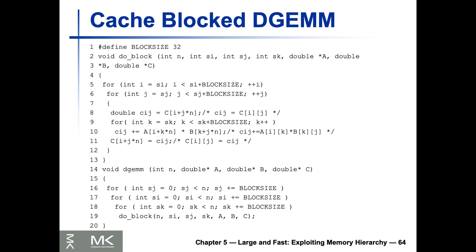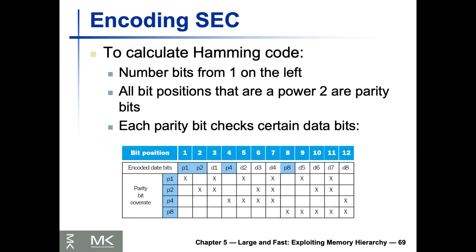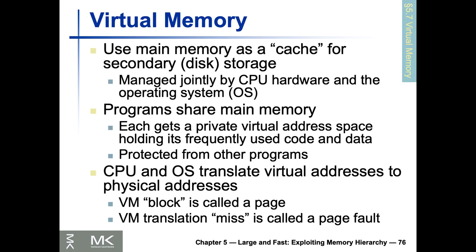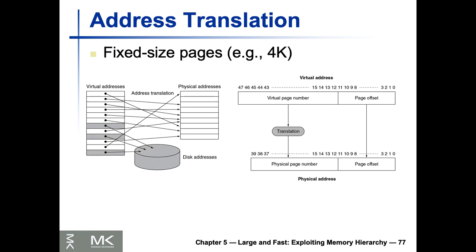We'll skip Hamming encoding, virtual machines, and page/address translation due to time constraints. On Monday we'll have a review of chapters four and five with sample questions. Slides will be posted tonight.